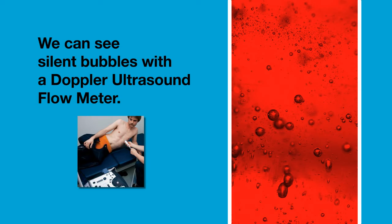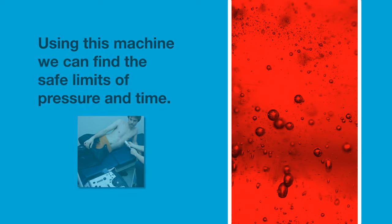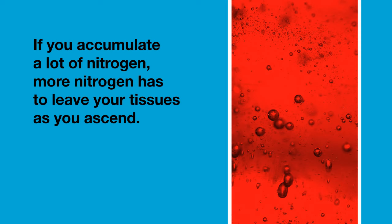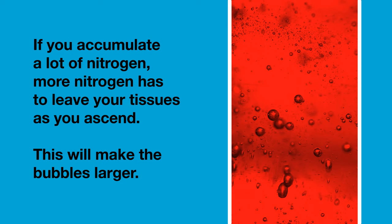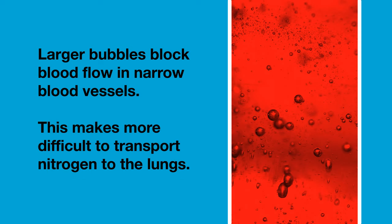We can see silent bubbles with a Doppler ultrasound flow meter. Using this ultrasound machine and volunteers in hyperbaric chambers, we can find the safe limits of pressure and time, because we can see when there are too many bubbles to be safe. If you accumulate a lot of nitrogen by staying too long at depth, or if you come up too fast, more nitrogen has to leave your tissues on ascent, making the bubbles larger. When bubbles become larger, they can block blood flow in narrow blood vessels, making it even more difficult to transport nitrogen to your lungs.